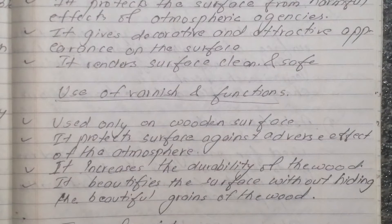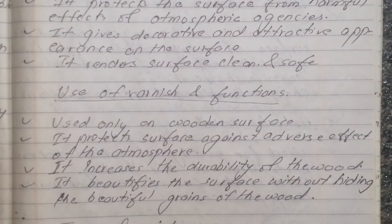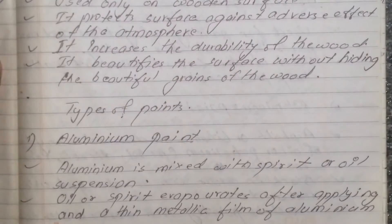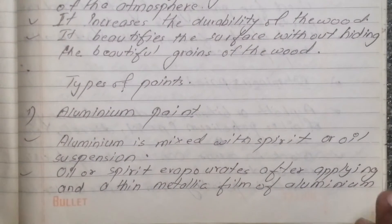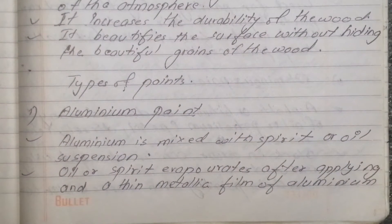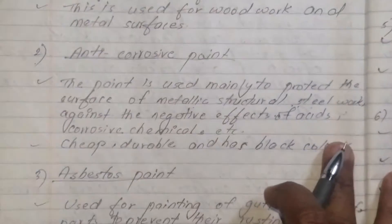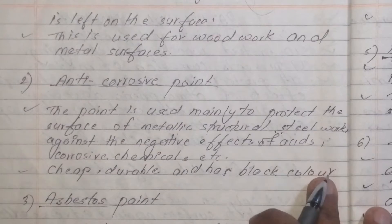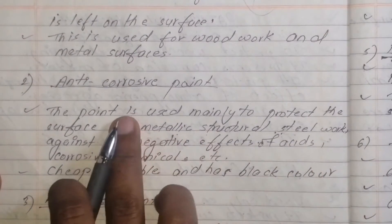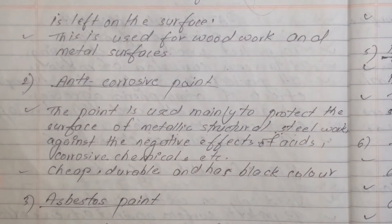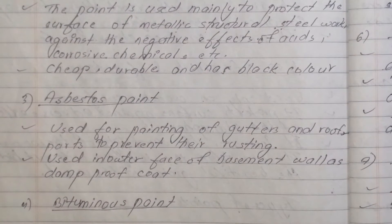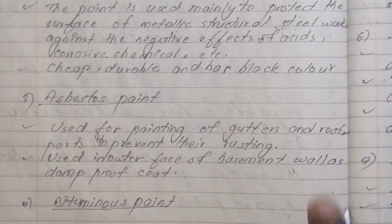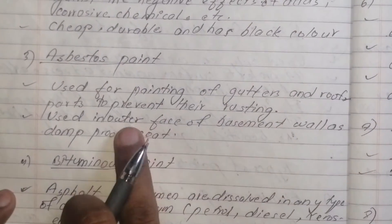Now, what are the types of paint? The types include: aluminium paint, anti-corrosive paint, and asbestos paint.